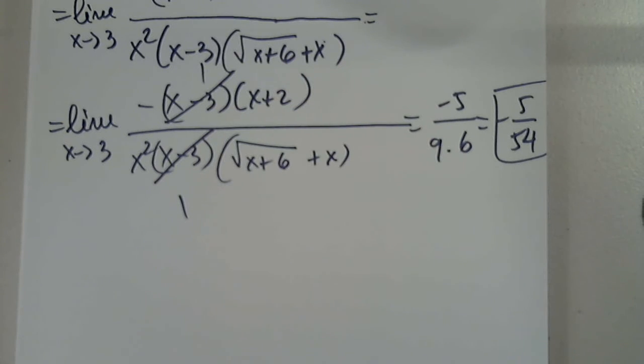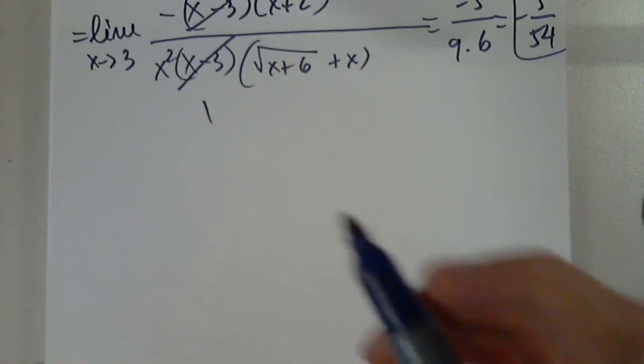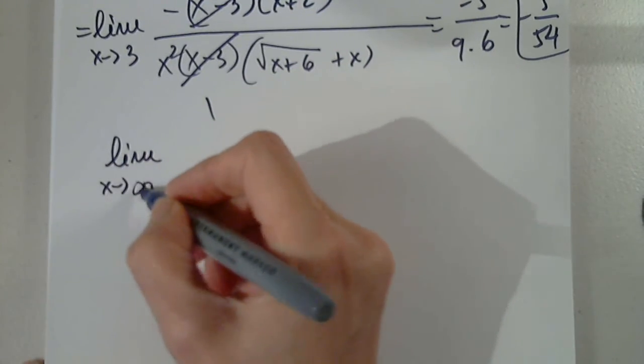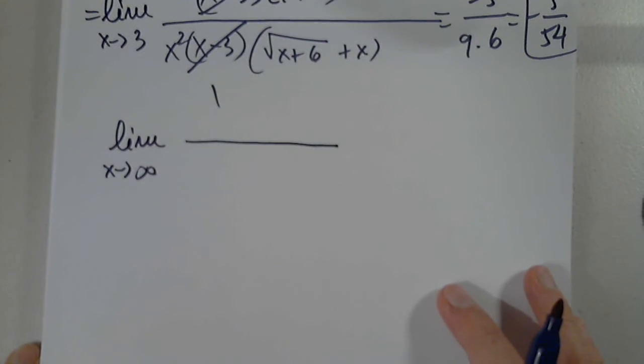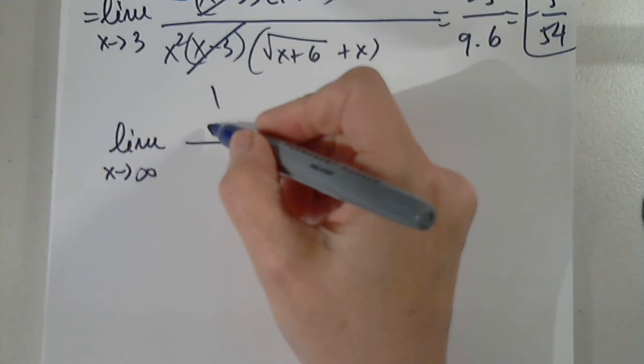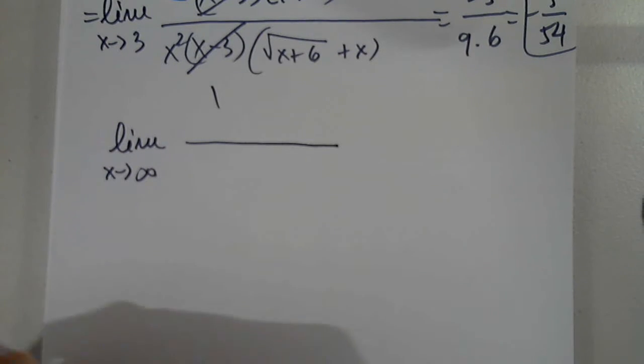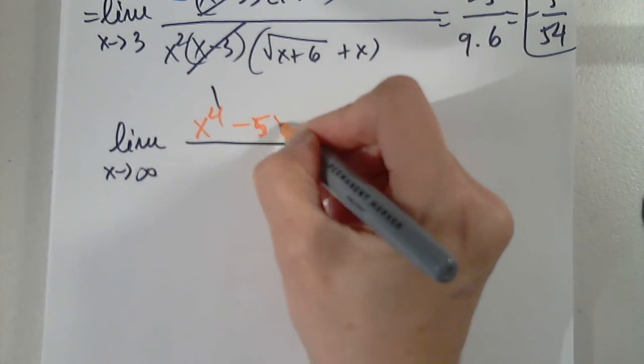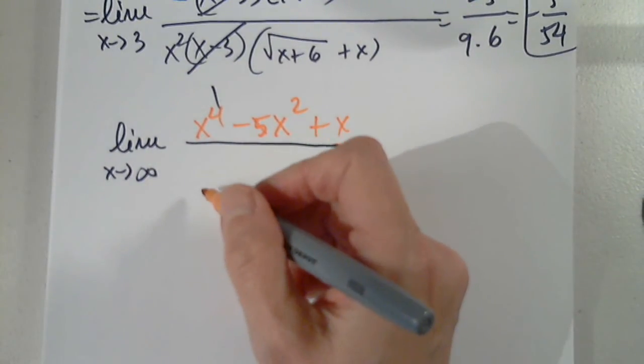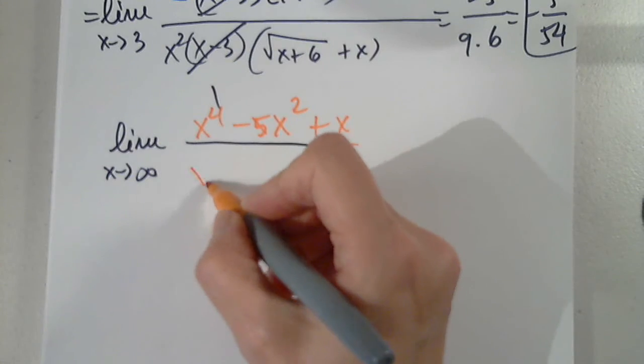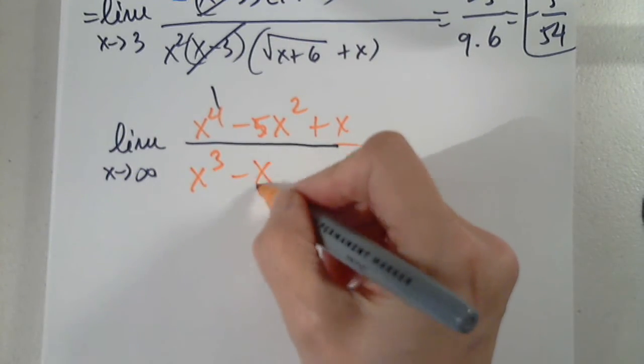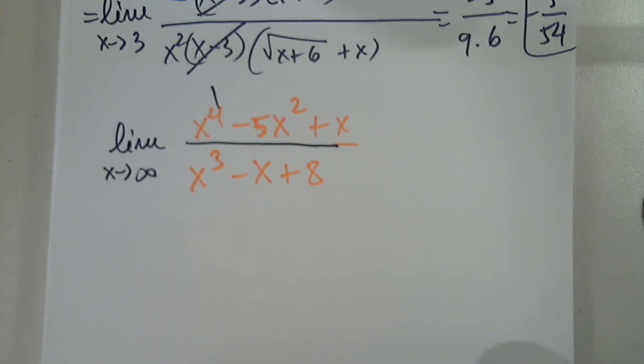Are we finished with this or do we have anything else? What if there was a limit where x is approaching infinity with polynomial in the numerator and denominator? Excellent. Like with the common factor. Just give me an example. Any example. Very good point.